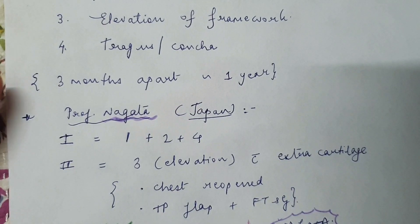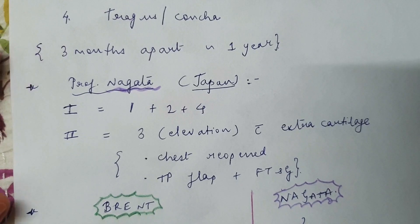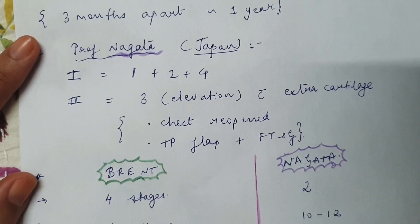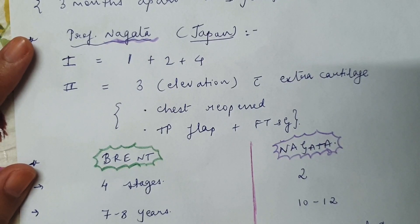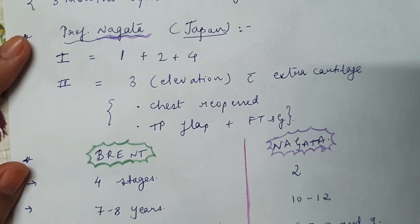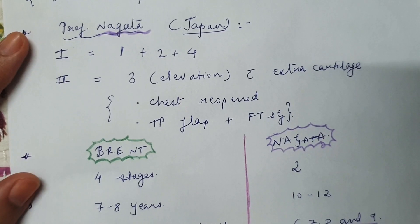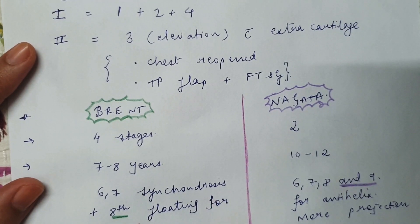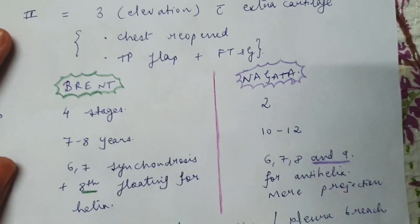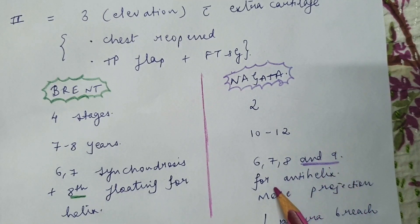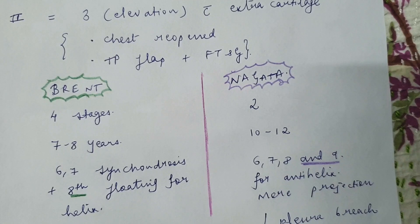In a comparative analysis: Brent describes four stages versus Nagata's two stages. The four-stage reconstruction begins at seven to eight years, whereas Nagata recommends ten to twelve years because more cartilage is required. Professor Brent uses the sixth and seventh synchondrosis as the base and takes the eighth floating rib for the helical rim. Professor Nagata takes ribs six, seven, and eight, and also uses the ninth rib for antihelix reconstruction, providing more projection.